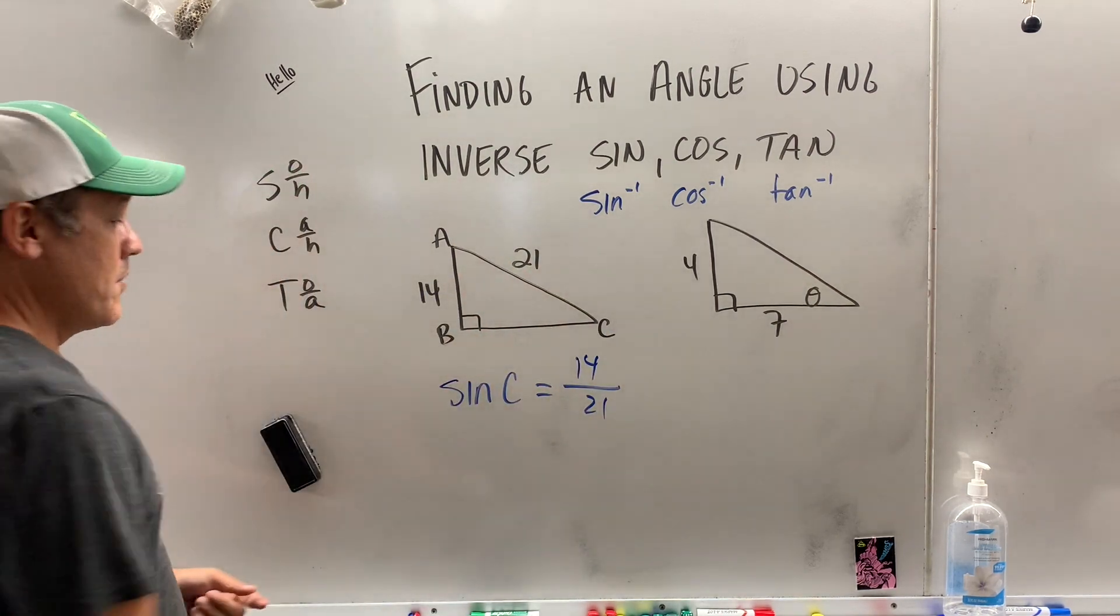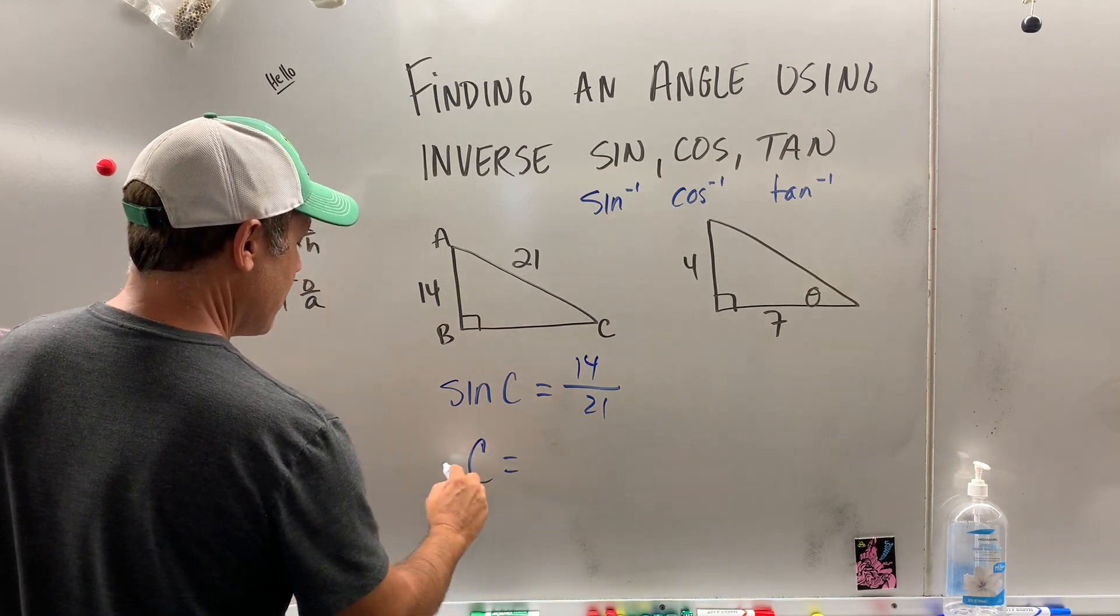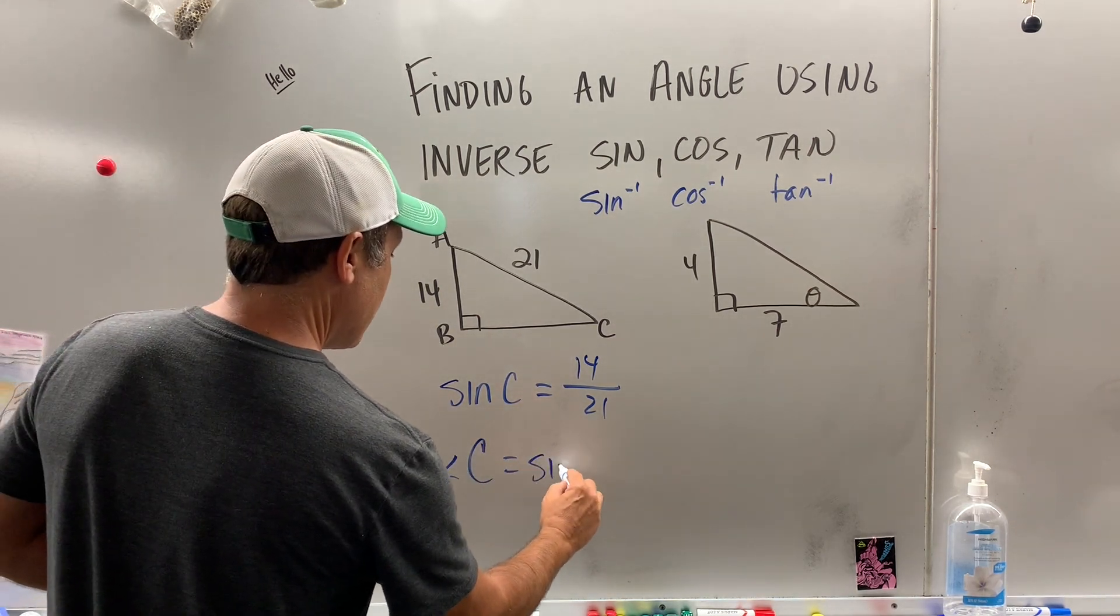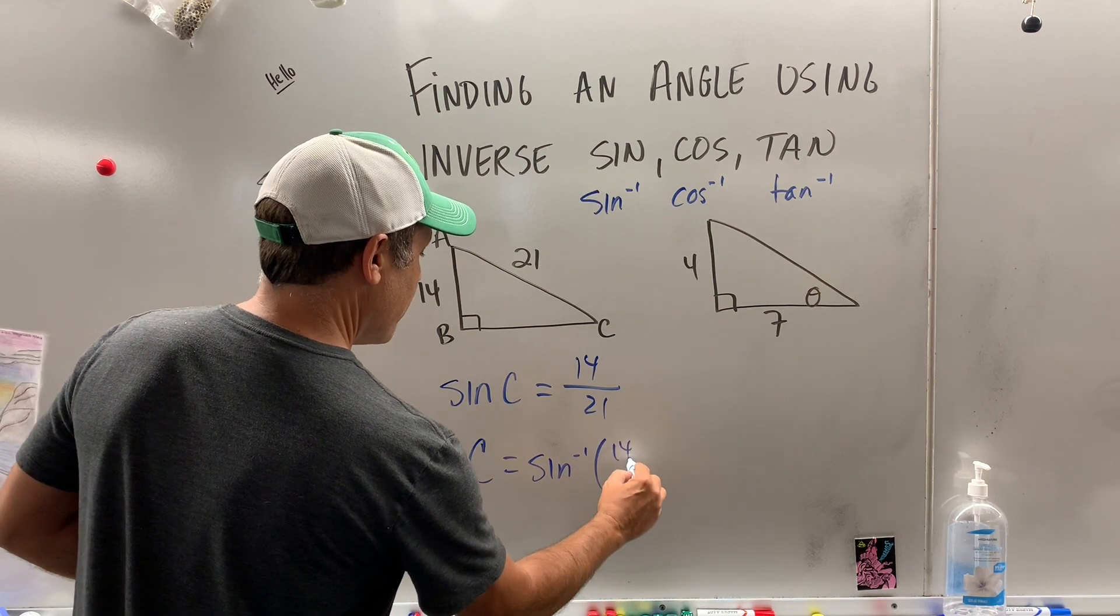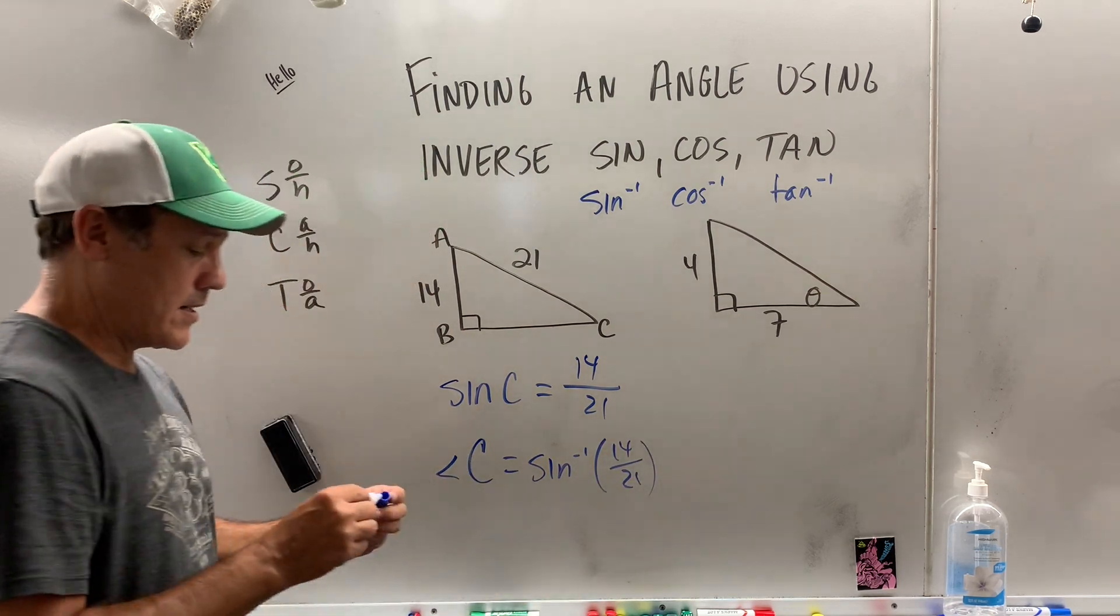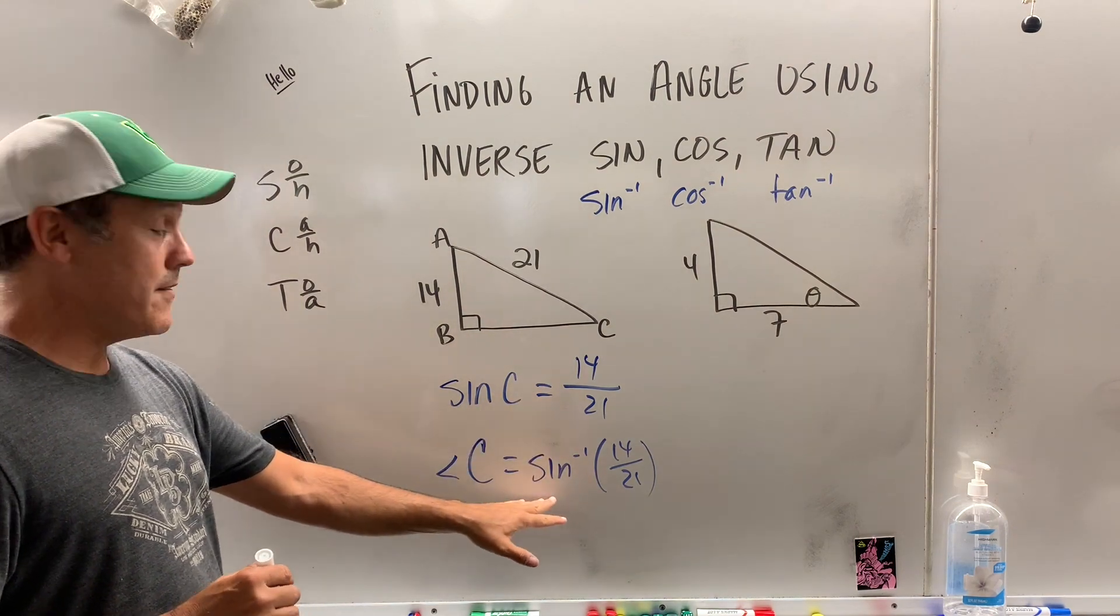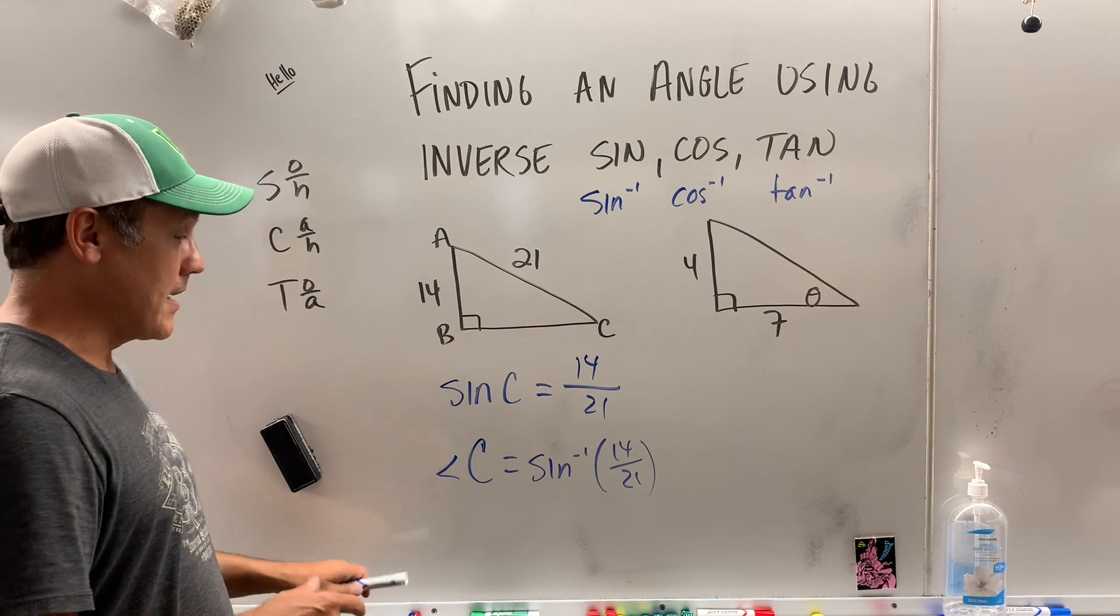So now what do we do? Well, angle C is equal to the inverse sine of 14 over 21. So what did I do? All I did is I got rid of the sine, brought it over here, made it inverse sine, and that's going to find us the angle.